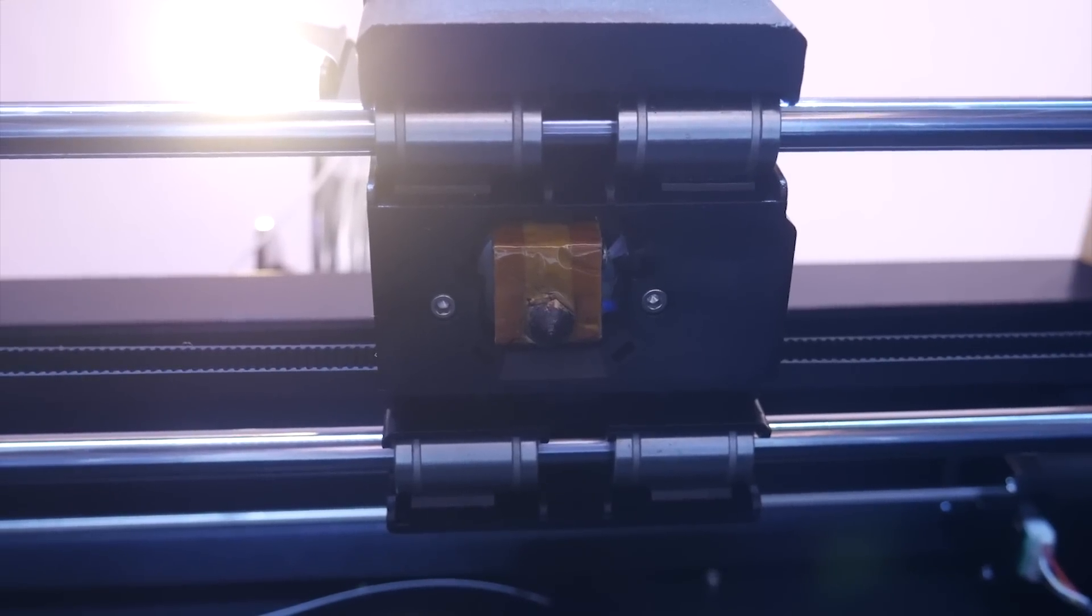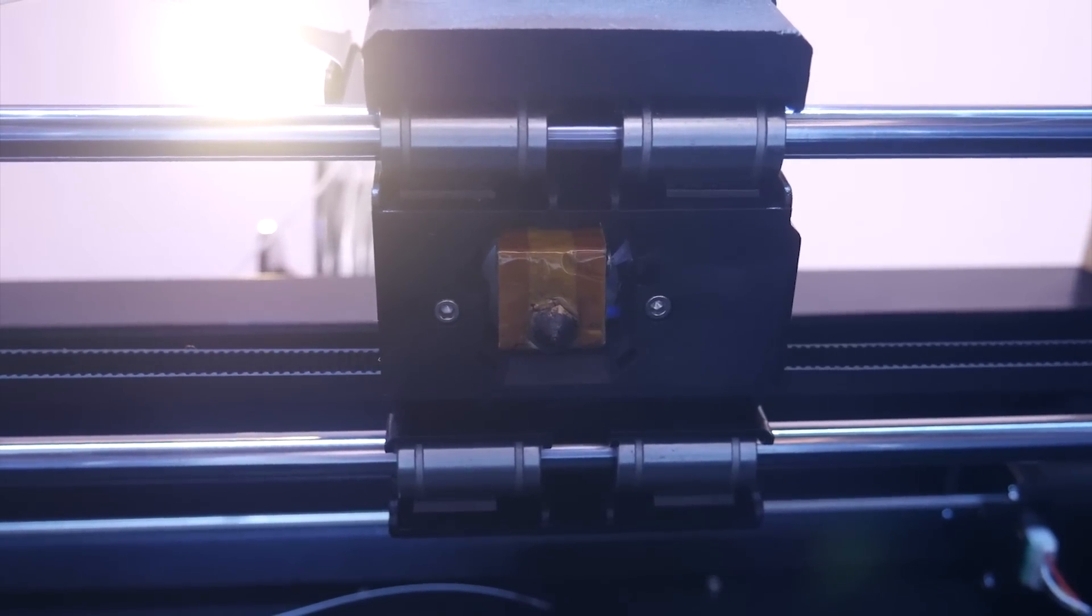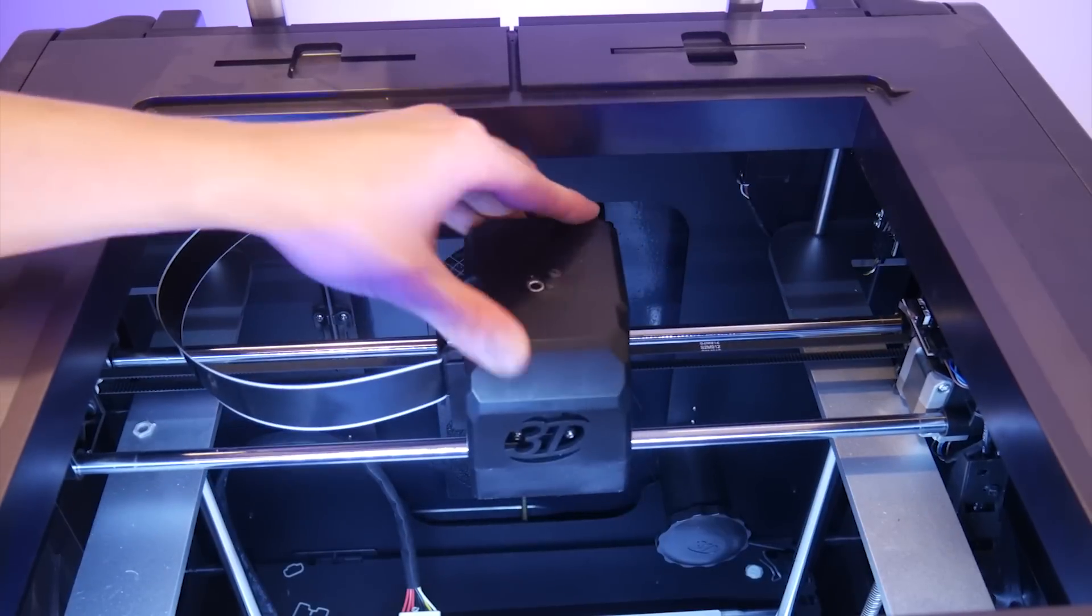The whole extruder carriage rides on two smooth rods using four bearings, which adds a whole lot of rigidity to the extruder assembly.